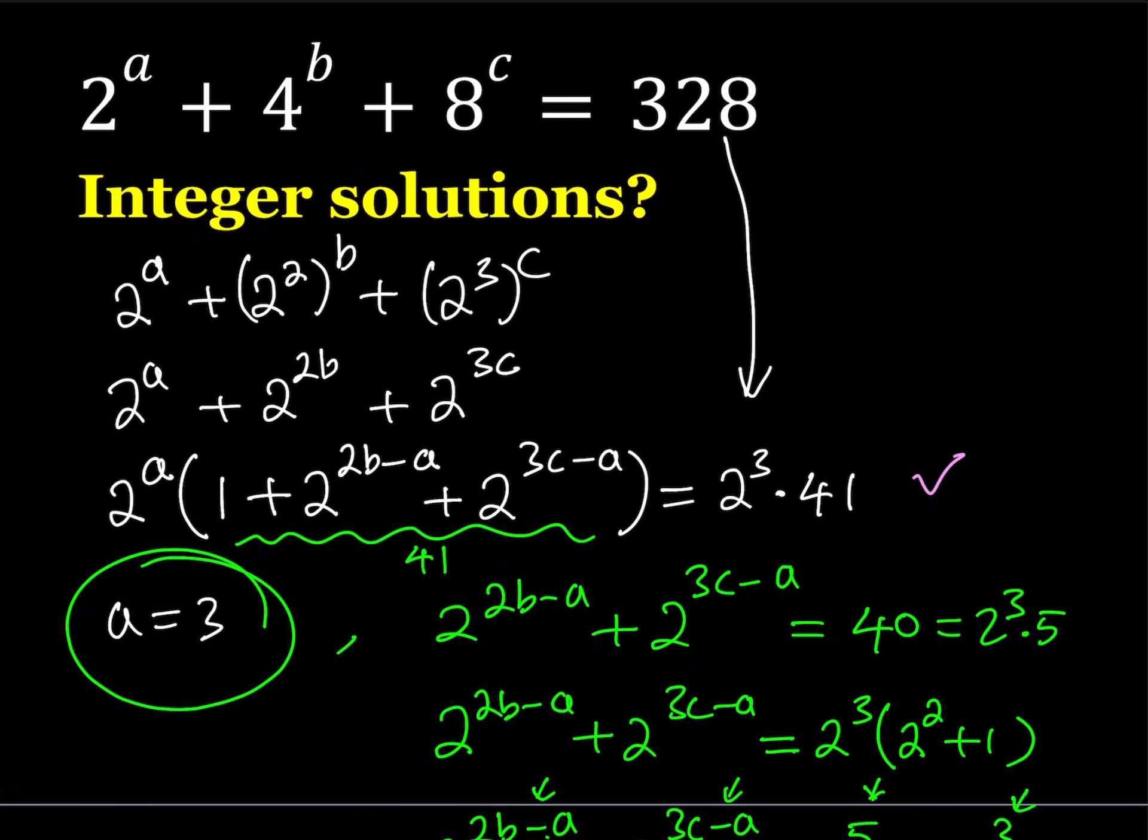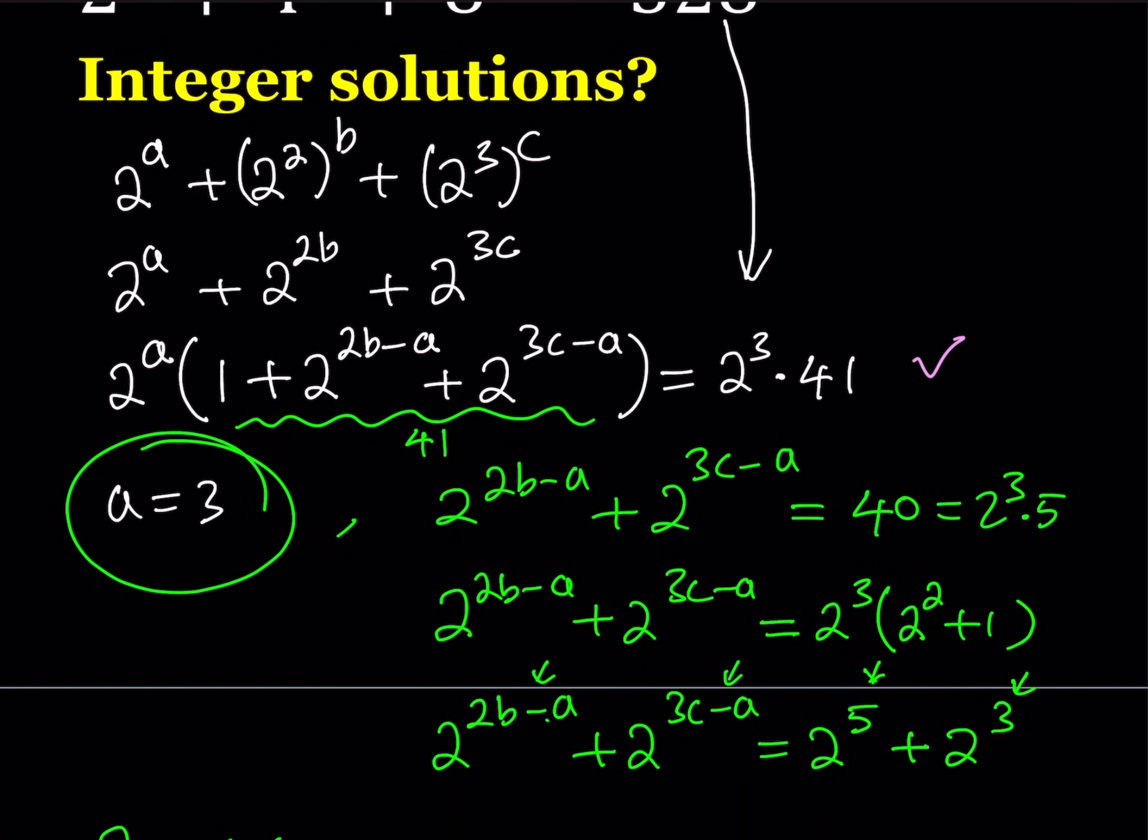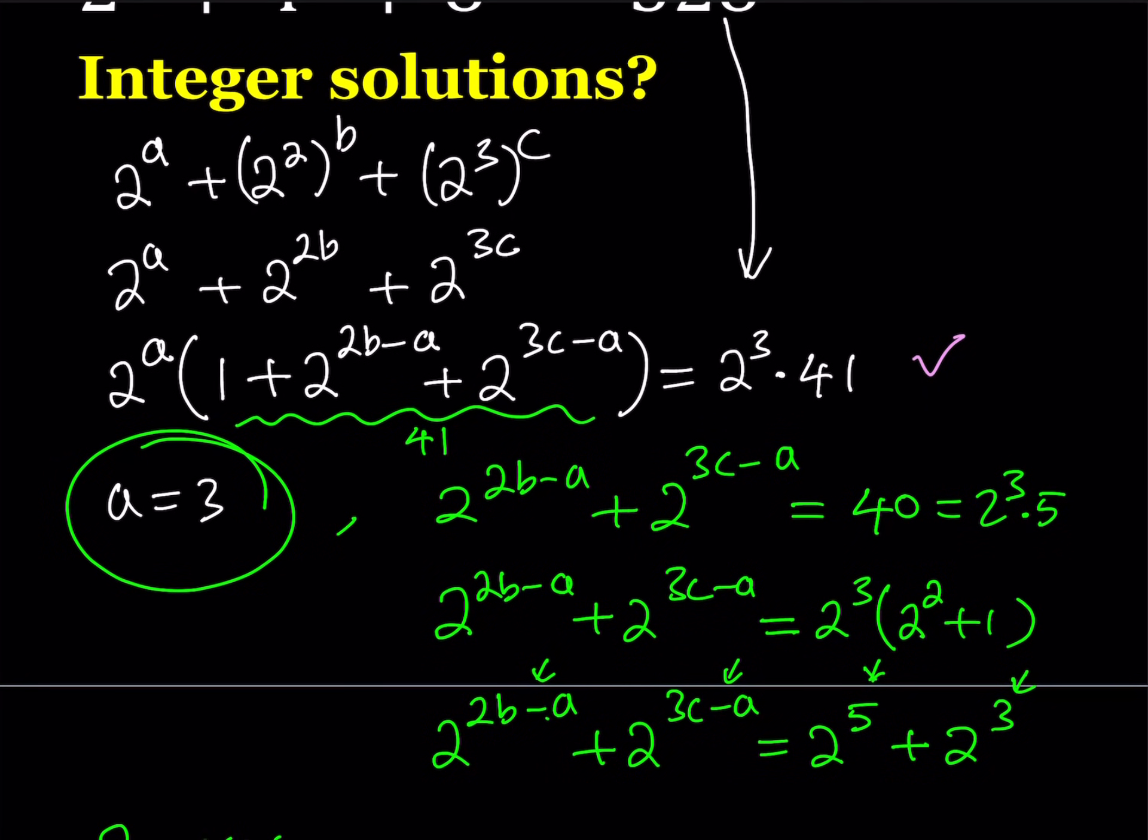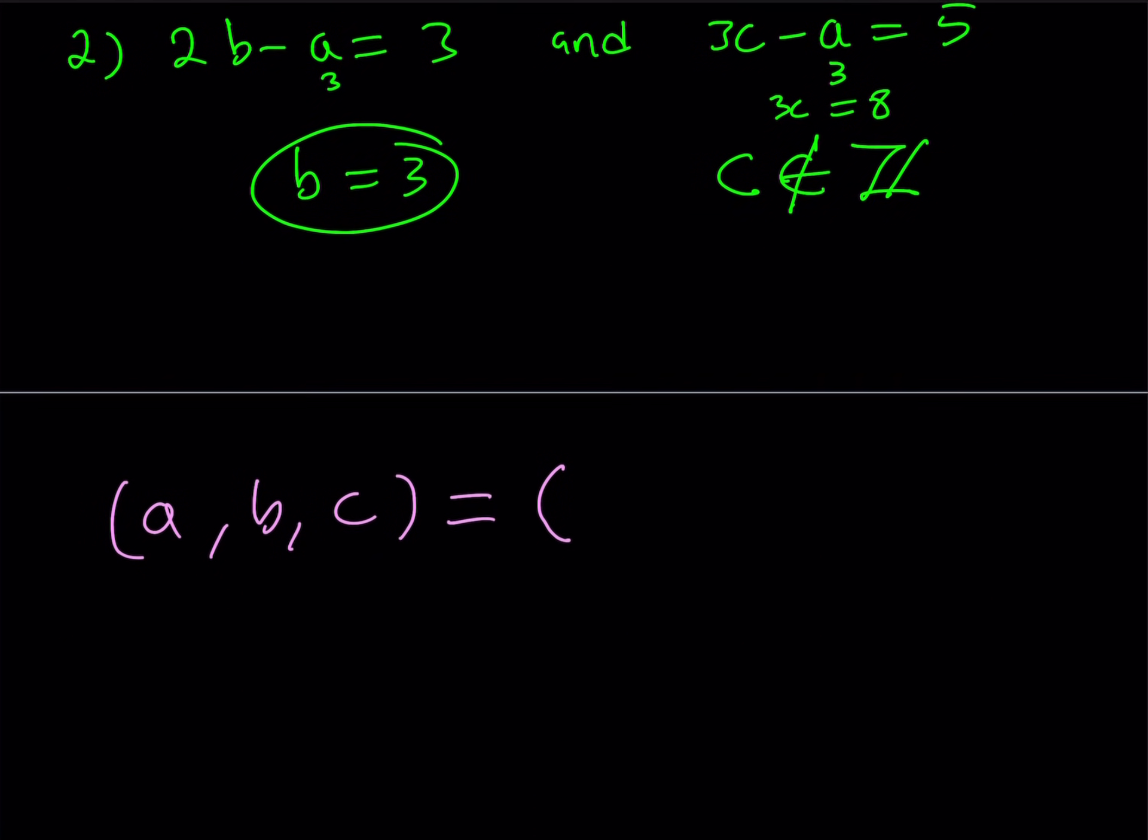Because if you switch a and b, you're going to get different results, obviously, because one of them is 4 to the power b, the other one is 2 to the power a. So they're different bases. And obviously, if you change them around, you're going to get either smaller answers or larger answers, which is not going to equal what you want.